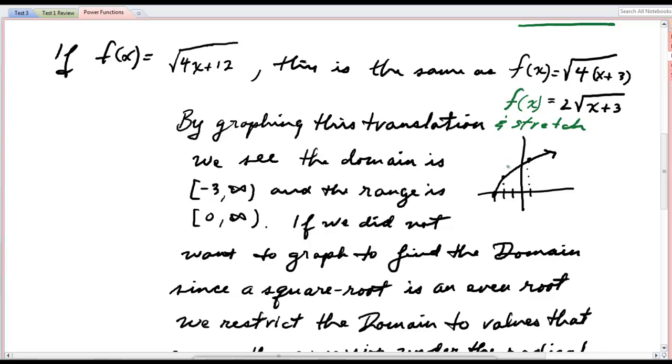And so when we graph that, we start at what makes this term 0, which is negative 3. And starting at negative 3, which includes that, because you can take the square root of 0 and negative 3 plus 3 is 0. So it starts at negative 3 and it proceeds from there. So we see the domain is negative 3 to infinity and the range is 0 to infinity.